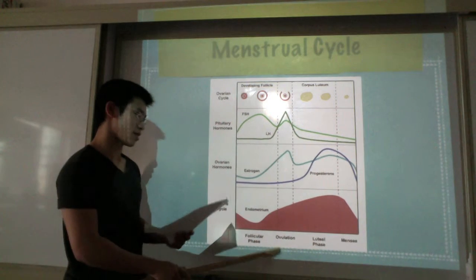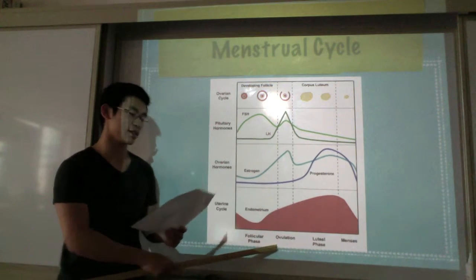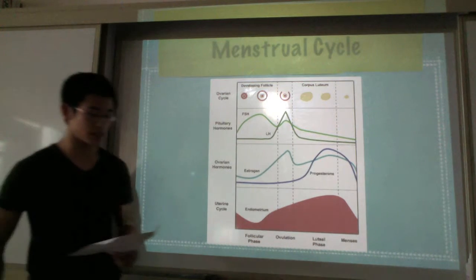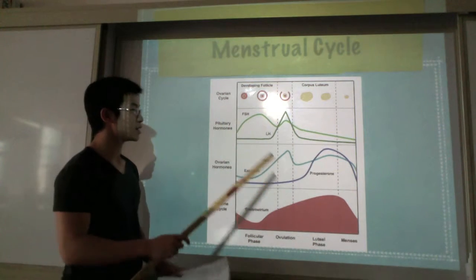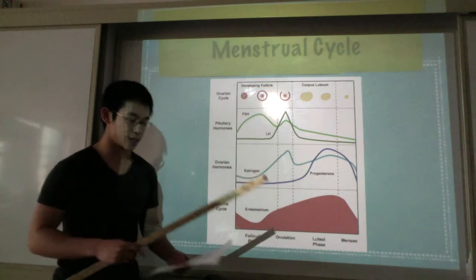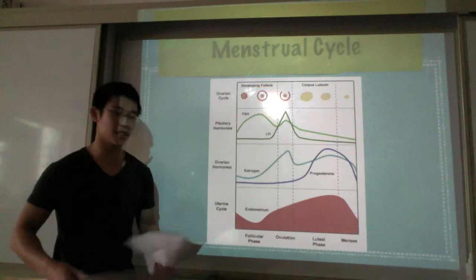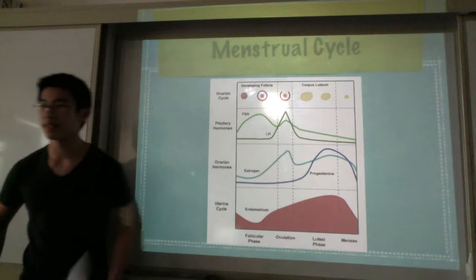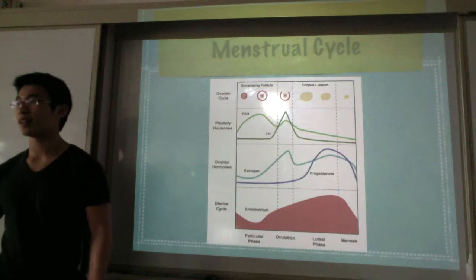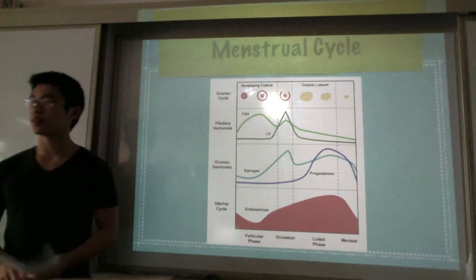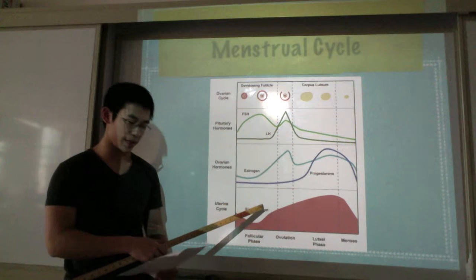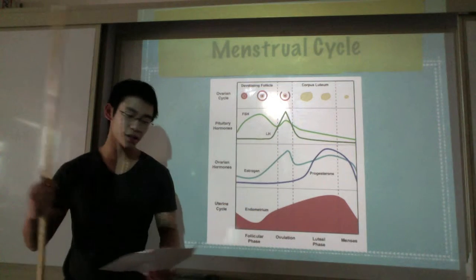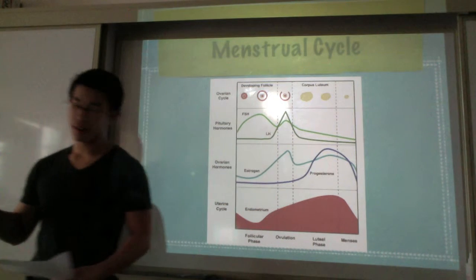The next stage is ovulation. Ovulation causes a surge in LH, which causes ovulation — which is called the egg release. It also causes the—